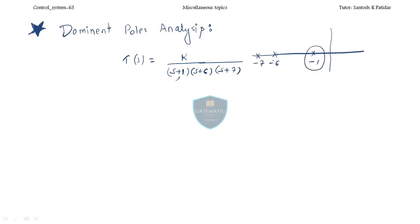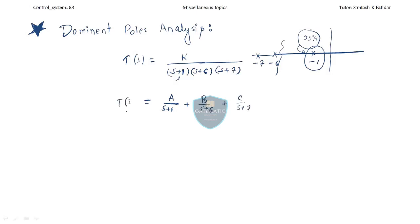The dominant pole analysis says that whatever output this transfer function produces for any input, the output will be affected more by the pole nearest to the origin — that is, −1. About 99% of the output content belongs to this pole. The poles at −6 and −7 will be negligible. If you take the partial fractions, you get terms A·e^(−t), B·e^(−6t), and C·e^(−7t).